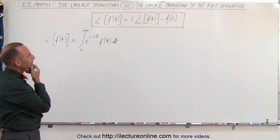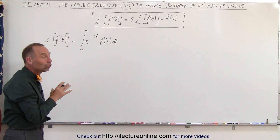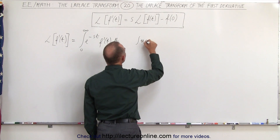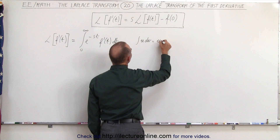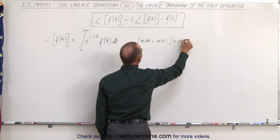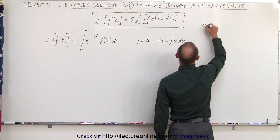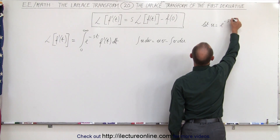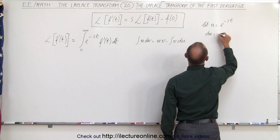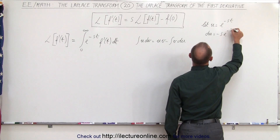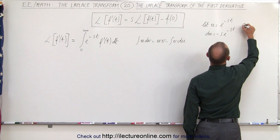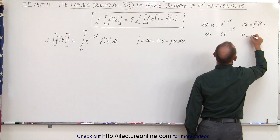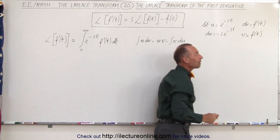So how do we integrate that? We can integrate it using the technique of integration by parts. We know that the integral of u dv is equal to u times v minus the integral of v du. In this case, if we let u equal e to the minus st, then du equals minus s times e to the minus st. And if we let dv equal f prime of t, then v equals f of t — simply the integral of f prime is f.